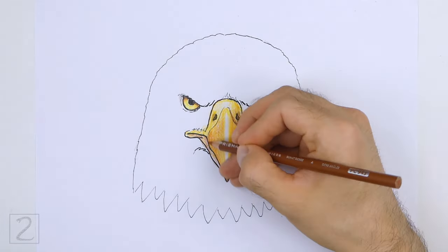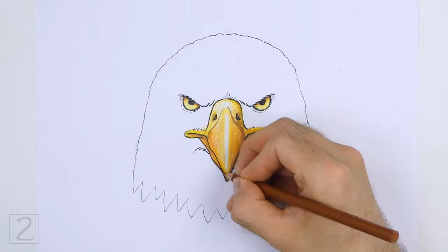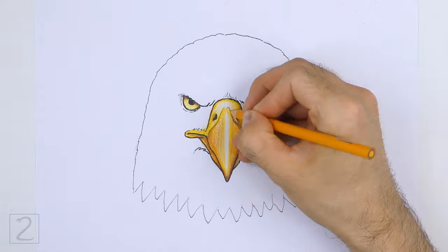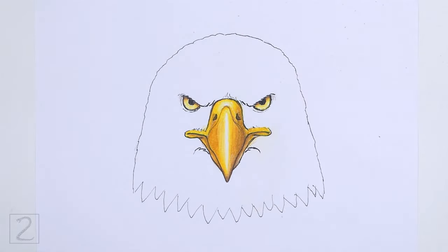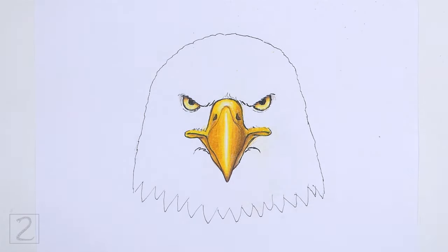Leave a thin strip blank across the beak for a bright highlight. Slowly and gradually blend all the colors together. Push down slightly harder on your pencils to blend the colors together.